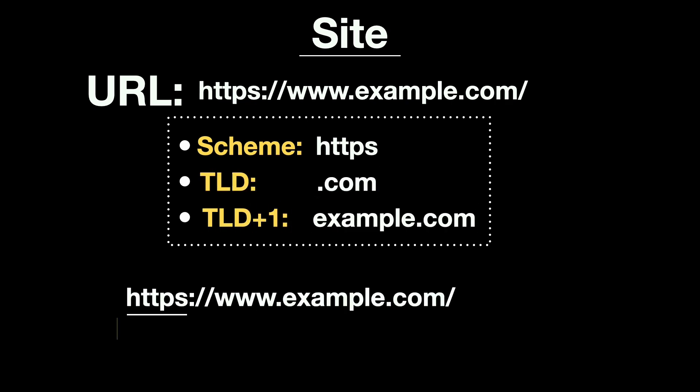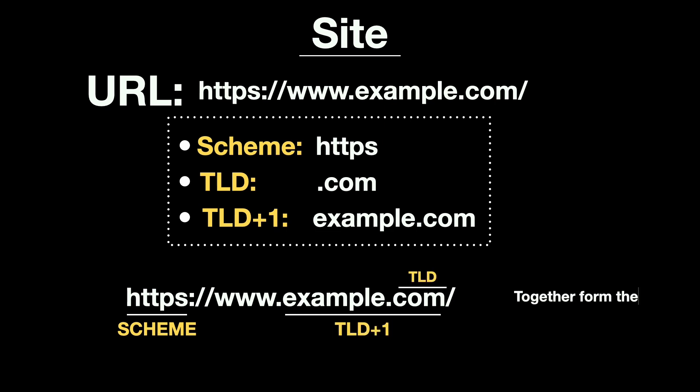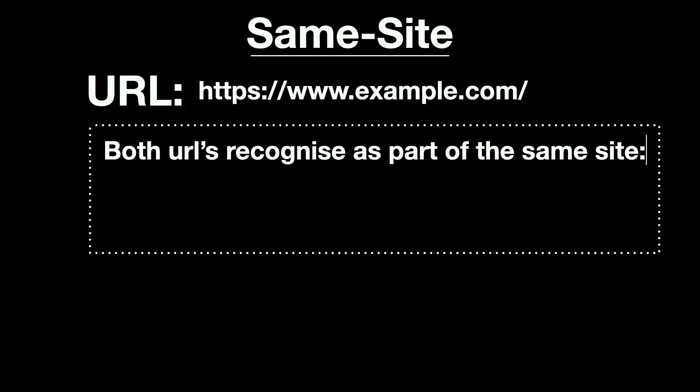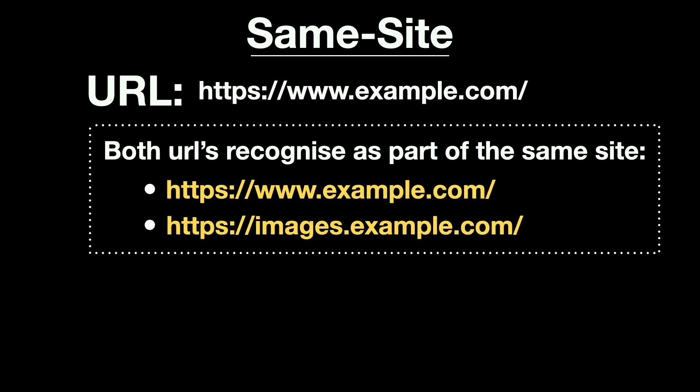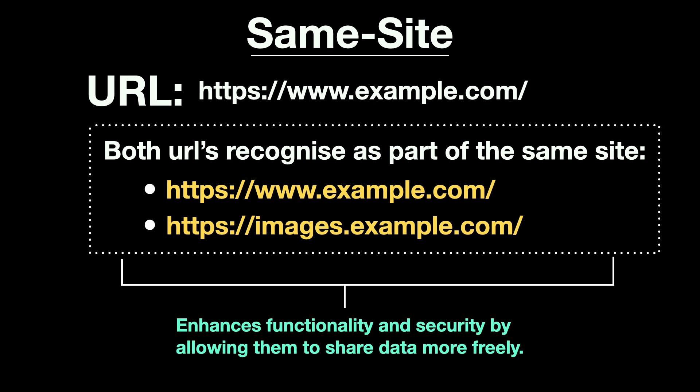Sites help browsers figure out how different web pages and resources are related to each other. For example, if you visit example.com and images.example.com, the browser understands they belong to the same site and might allow them to share data more freely, enhancing functionality and security. Websites that share the same scheme and TLD+1 are considered same-site. If they differ in either the scheme or the TLD+1, they are cross-site.